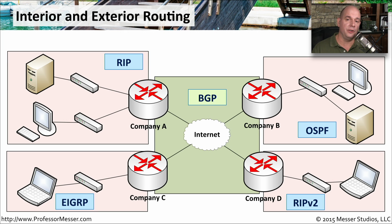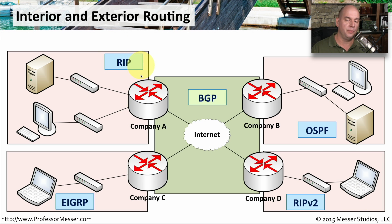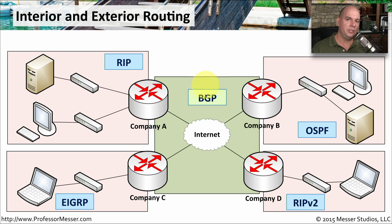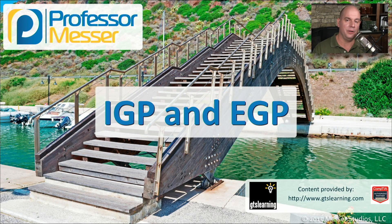If we put all of this together, it looks like this: we have multiple autonomous systems at different companies. Company A is using RIP internally, Company B is using OSPF, Company C is using EIGRP, and Company D is using RIPv2. To communicate across all of them, we have an exterior gateway protocol — BGP — that allows all of these companies to send routing information to each other while still running their own routing protocols inside their networks.